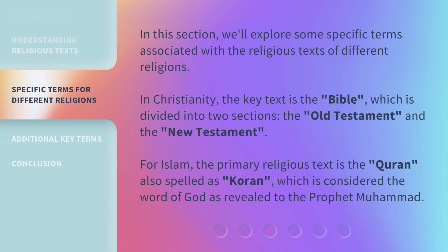We'll explore some specific terms associated with the religious texts of different religions. In Christianity, the key text is the Bible, which is divided into two sections, the Old Testament and the New Testament. For Islam, the primary religious text is the Quran, also spelled as Koran, which is considered the word of God as revealed to the Prophet Muhammad.